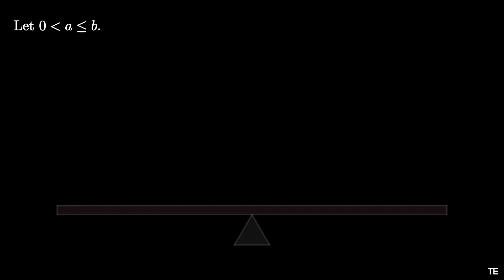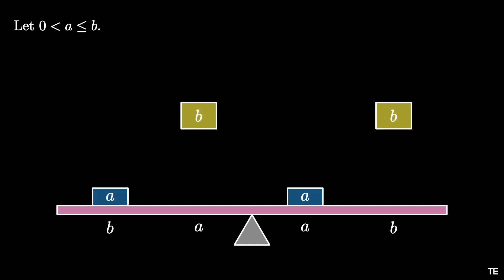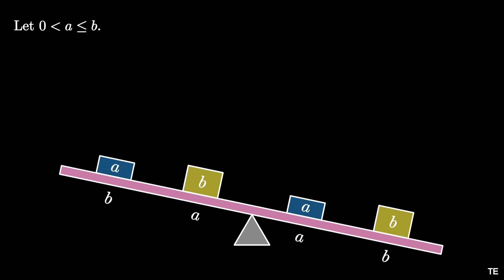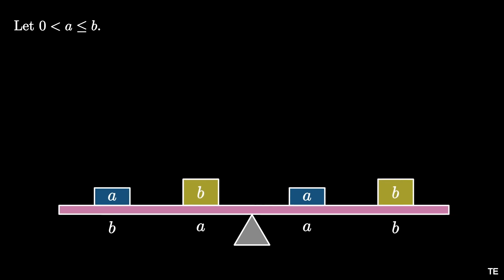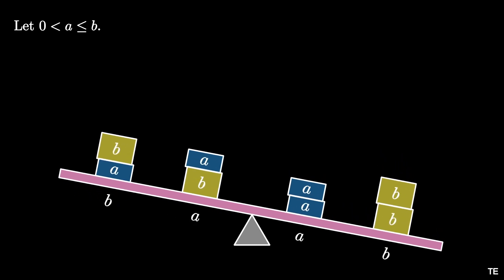Let's revisit the original fulcrum and platform with distances a and b on either side. We have masses a and b on either side at switched distances. This system will rotate clockwise because the heavier weight is further away on the right. Next, let's drop masses of size a at distance a and masses of size b at distance b. This does not affect the net moment of the system, so it will still rotate clockwise.